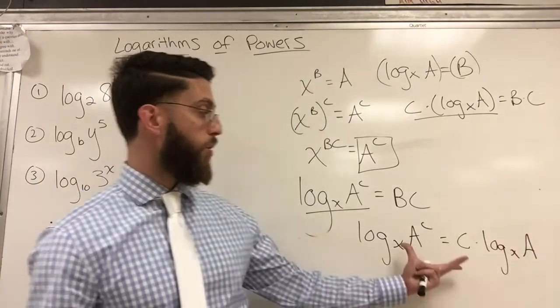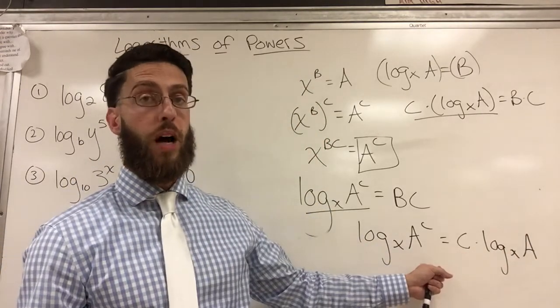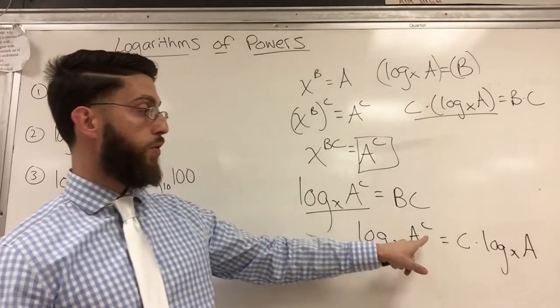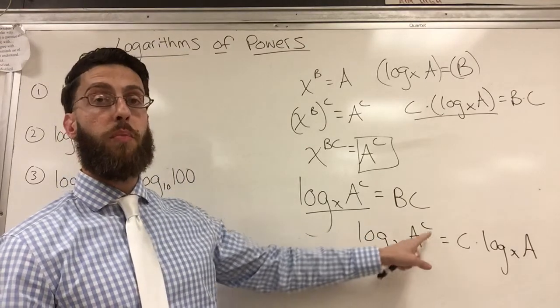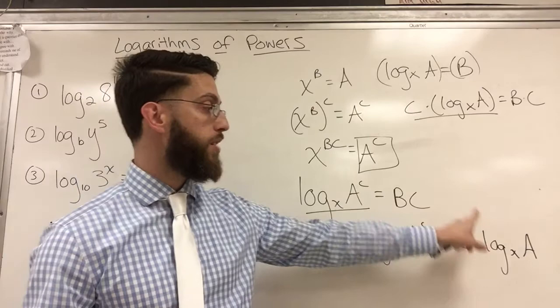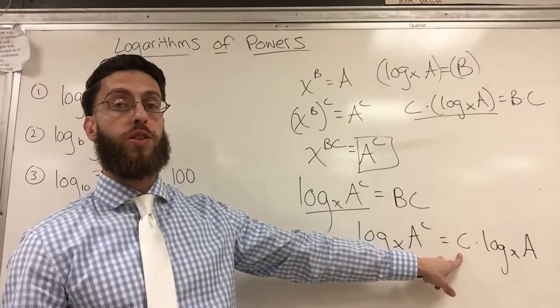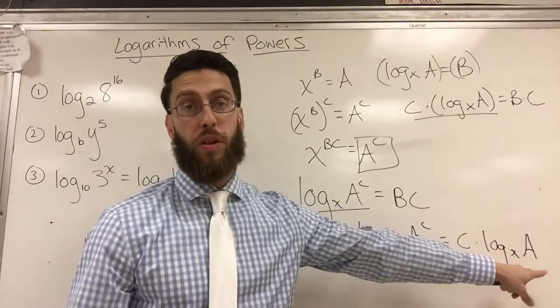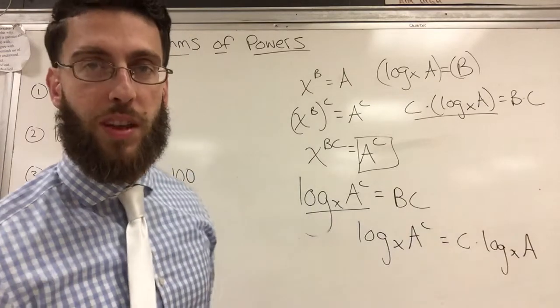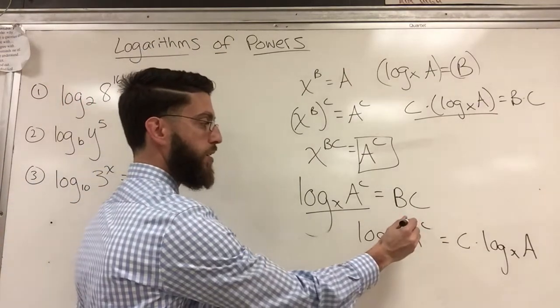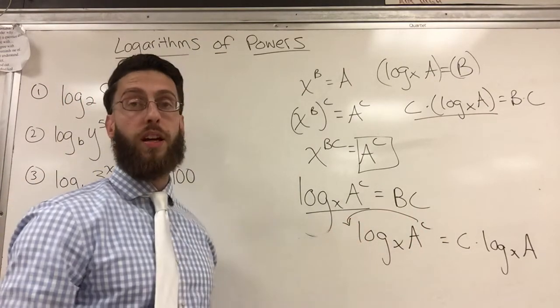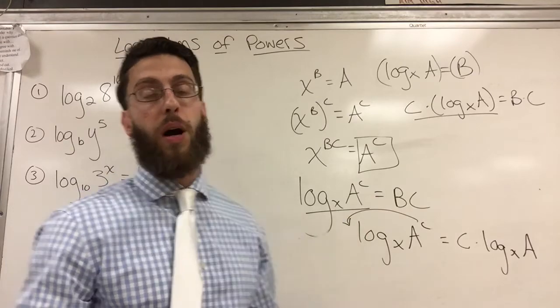So here is a rule that you should know: log base x of a to the c is equal to c times log base x of a. Okay, so here's a simple rule. This is called the power rule. And all it says is if you have a logarithm of a power, it's the same as taking the exponent as the coefficient and then the logarithm of just the base. Can you see that? Good. Alright, so it's basically taking that c and rewriting it as the coefficient. And that's the power rule in short.